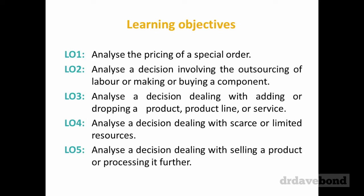We'll think about a situation where you might want to drop a product line — it looks like a particular product or division is losing money, and you ask: should we get rid of it? We'll also look at what happens when you can't produce unlimited amounts of products. You might be limited by machine hours or direct labor hours, so you've got to make decisions about which things to produce. And lastly, looking at whether you value-add to a product or just sell it as is.